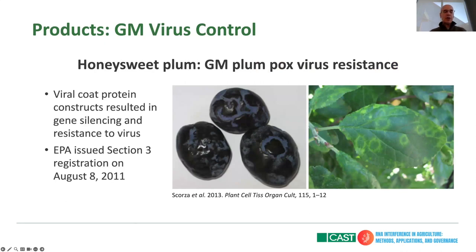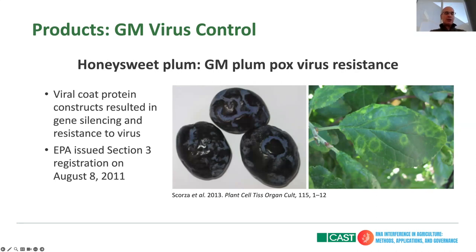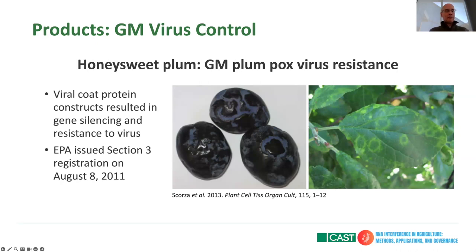Now, just a few quick examples of the kinds of products that have been produced with RNAi technology. The first is Honey Sweet Plum, which is resistant to plum pox virus. This product came about through research at a USDA lab that was initially going to overexpress a coat protein to confer some resistance. What they found was they didn't overexpress the coat protein, but still got resistance. When they looked closer, they found that their genetic construct had rearranged in a way that created a double-stranded RNA intermediate, which was then ultimately spliced into siRNAs that conferred virus resistance. A really interesting application — not intended, not engineered that way, but ultimately the genetics turned out to be RNAi. This product was registered by the EPA all the way back in 2011.